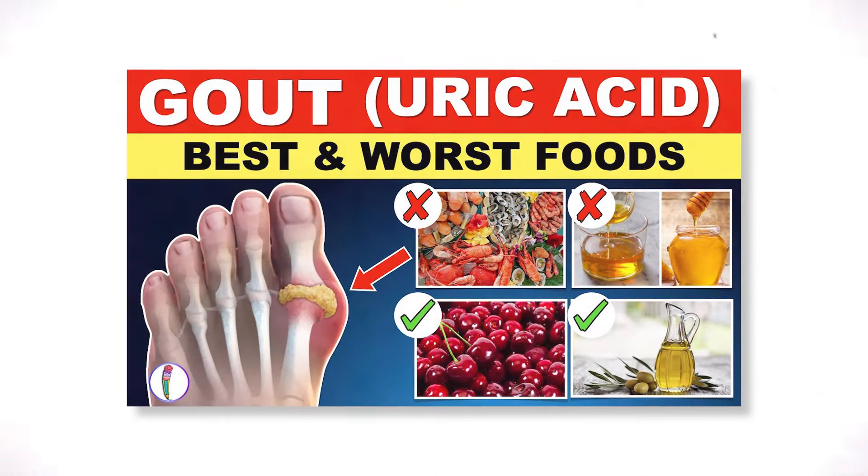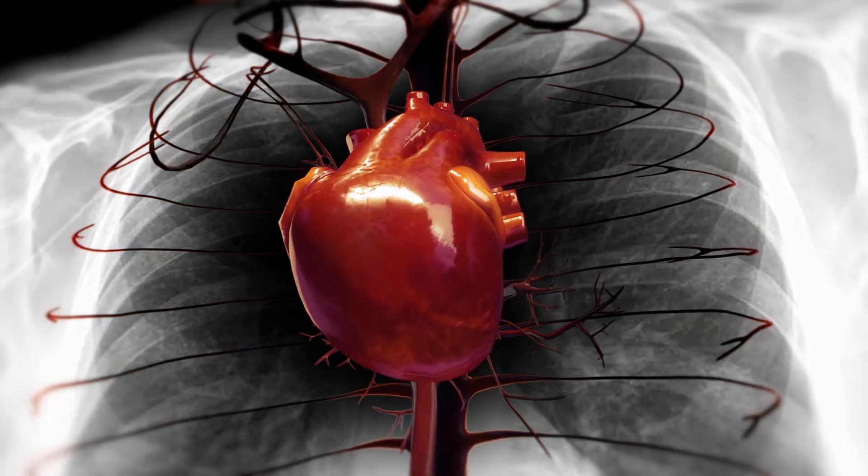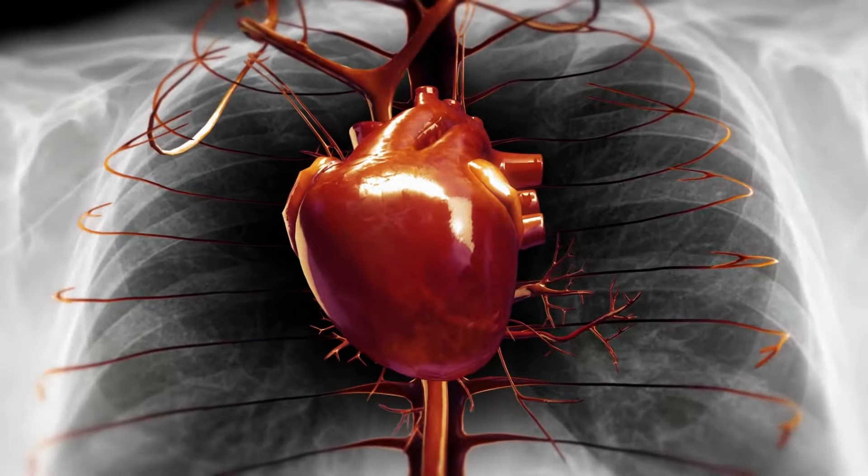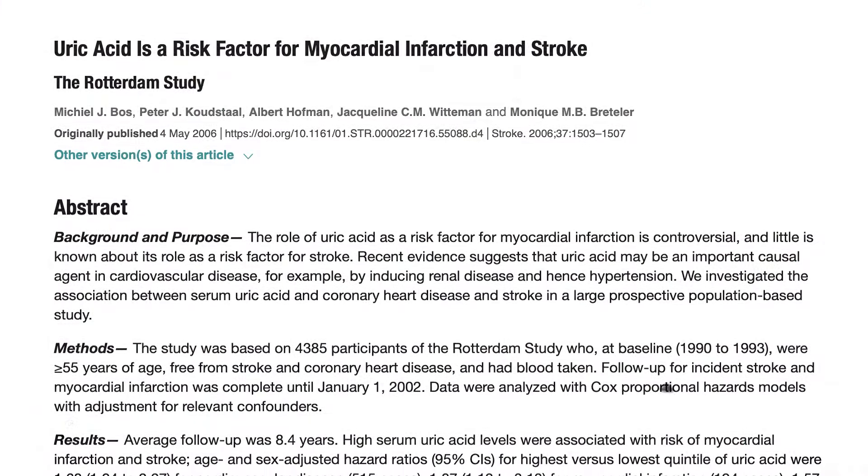Uric acid in high doses has always been considered dangerous. It's a byproduct of purine metabolism, and it's used as a biomarker. High levels have been associated with cardiovascular problems and perhaps diabetes — a lot of what they call chronic disease.